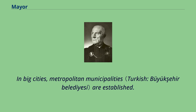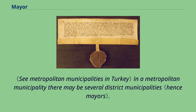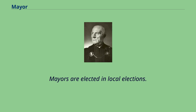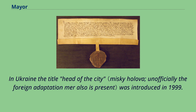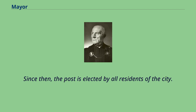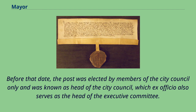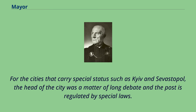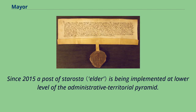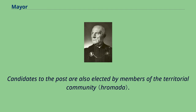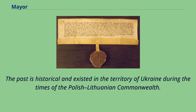In Ukraine, the title head of the city was introduced in 1999. Since then, the post is elected by all residents of the city. Before that date, the post was elected by members of the city council only and was known as head of the city council. For cities that carry special status such as Kyiv and Sevastopol, the head of the city was a matter of long debate and is regulated by special laws. Since 2015, a post of Starosta is being implemented at a lower level of the administrative territorial pyramid. The post is historical and existed in the territory of Ukraine during the times of the Polish-Lithuanian Commonwealth.